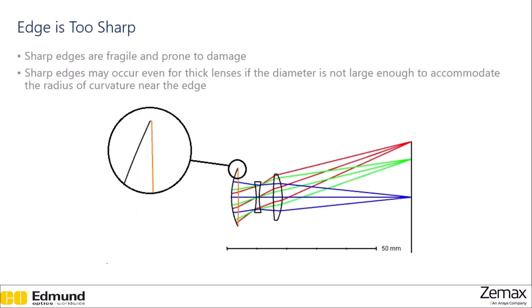Watch out for sharp edges — they're fragile and prone to damage. Sharp edges can occur even for thick lenses if the diameter is not large enough to accommodate the radius of curvature near the edge.